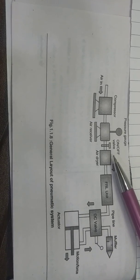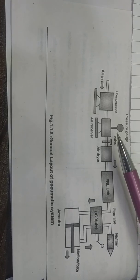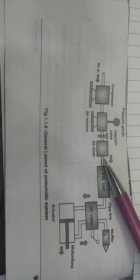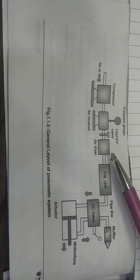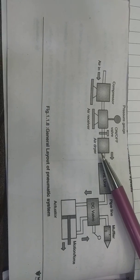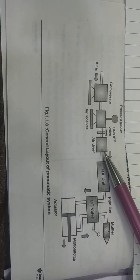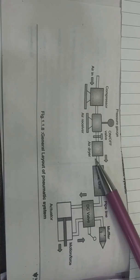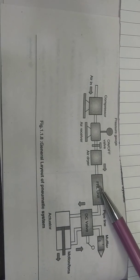An on/off valve is provided for supplying the air from the air receiver to the next component, that is the air dryer. The air dryer is provided so that whatever moisture is in the air can be removed with the help of the dryer.